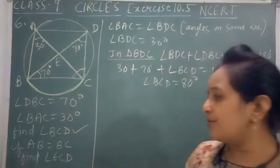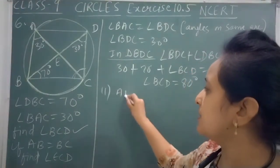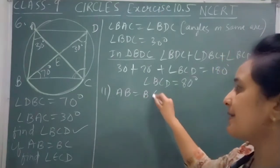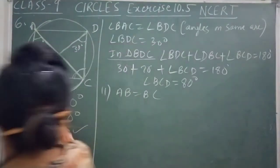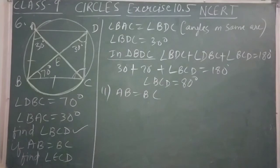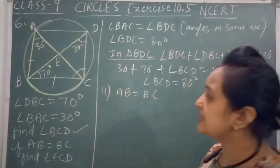Second part: if AB is equal to BC, then find angle ECD.